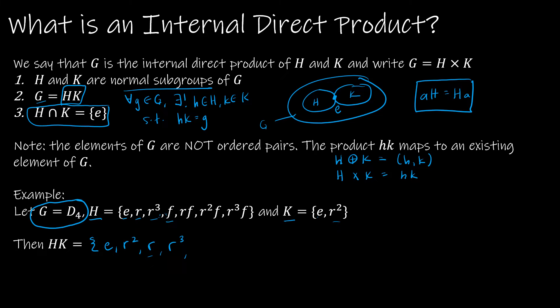Now I'm at f. So f times e would give me f. F times r² would actually give me r²f. And so you'll notice we have generated the entire group G or D4 using the product of H cross K. So the internal direct product.